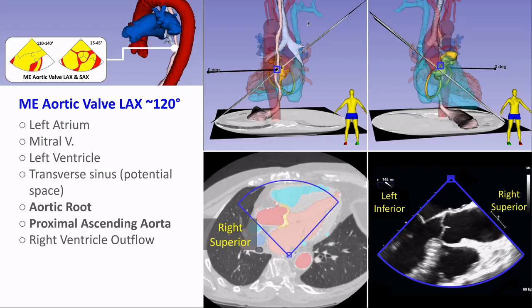Next we have the aortic valve long axis view, obtained from the long axis cut plane. Here you see the aortic root and proximal ascending aorta, the sinotubular junction, and it's a good view to assess for aneurysms, dissections, functioning of the aortic valve, and aortic insufficiency.